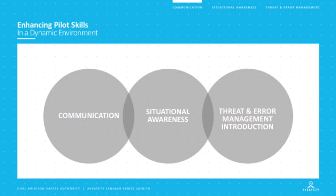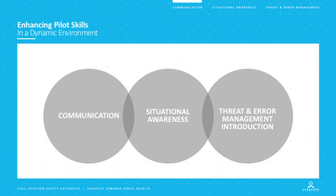The second topic is situational awareness — a huge area of study. People go to university for many years studying it. We'll look at what it is and identify some red flags you might recognise in your own flying that could signal you're losing situational awareness. The third topic is threat and error management, which has been around in aviation for a couple of decades and is becoming increasingly important.